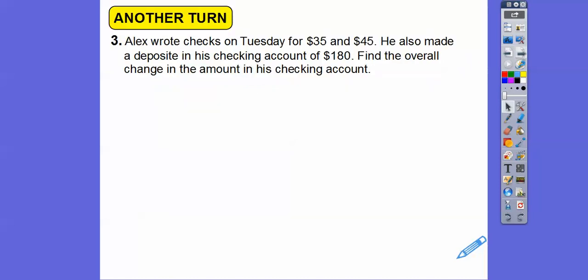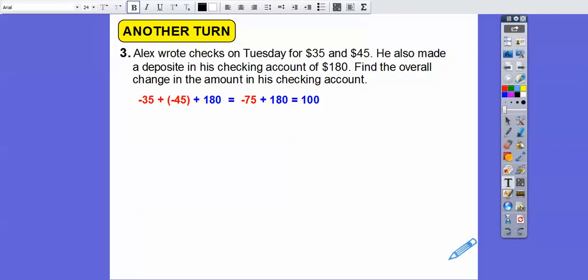Let's do another one just like this. Alex wrote checks on Tuesday for $35 and $45, so minus and minus. He also made a deposit, that's a plus, in his checking account for $180. Find the overall change in the amount in his account. I'm not going to get so technical like the last one. We'll just jump right to the solution. The $35 and $45 checks are minuses, and then we deposited $180. We can combine those. Negative $35 plus negative $45 is negative $80. Negative $80 plus $180 is $105. That means there's a $105 increase.